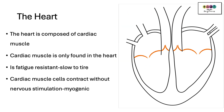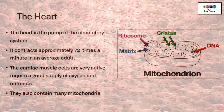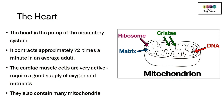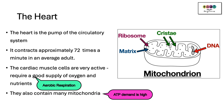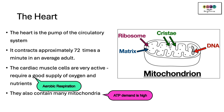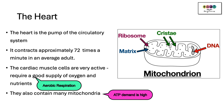The middle layer of the heart is composed of cardiac muscle. Cardiac muscle is only found in the heart; it is fatigue resistant or slow to tire. Cardiac muscle cells contract without nervous stimulation — this is referred to as being myogenic. The heart contracts approximately 72 times a minute in the average adult. The cardiac muscle cells are therefore very active and require a good supply of oxygen and nutrients for aerobic respiration, meaning there must be many mitochondria in these cells because a lot of ATP is required to fuel all of this contraction.